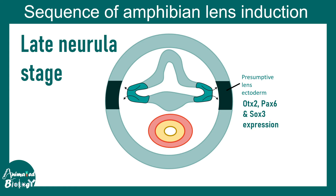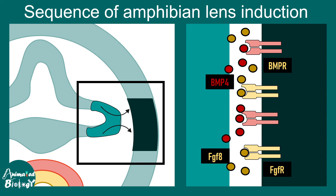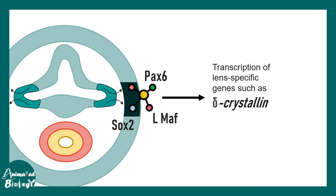These molecular factors work like a licensing key for the ectoderm to eventually become a lens. The inductive cues provided by the optic vesicle are BMP-4 and fibroblast growth factor 8 (FGF8). They bind to the BMP receptor and FGF receptor in the presumptive lens ectoderm, initiating a signaling cascade that leads to production of transcription factors of the SOX family and the LMAF family. These transcription factors — SOX2, LMAF, and PAX6 — work in a molecular network to trigger expression of delta crystalline, a defining element of the lens.